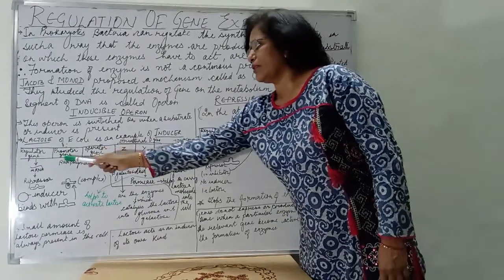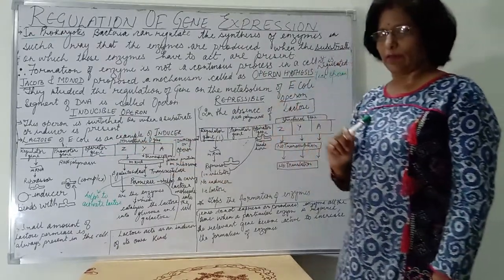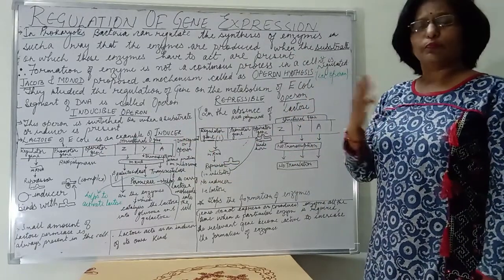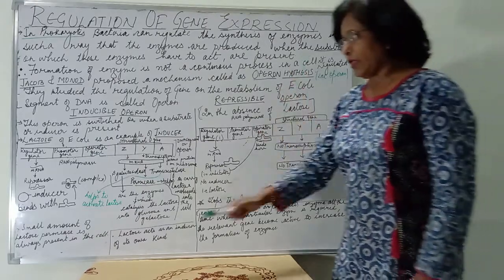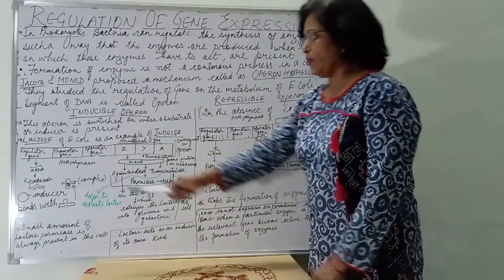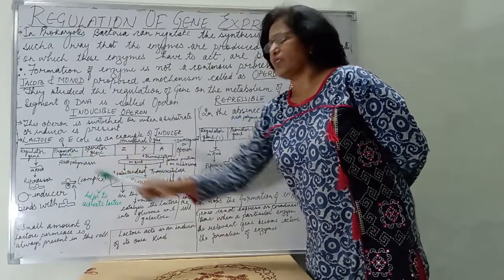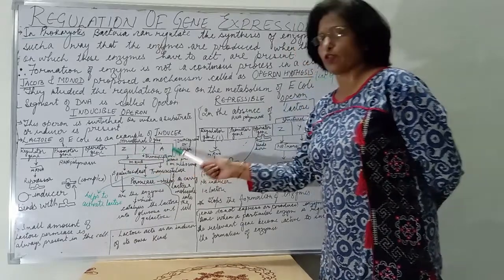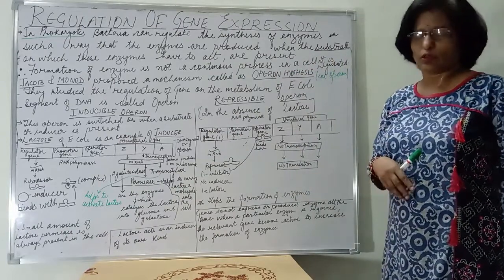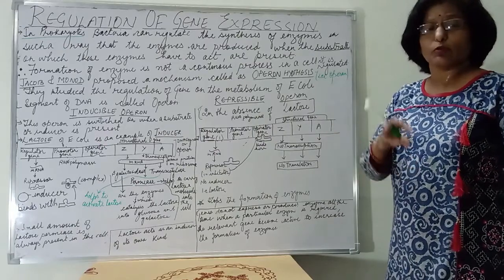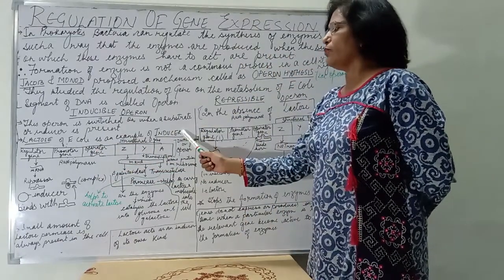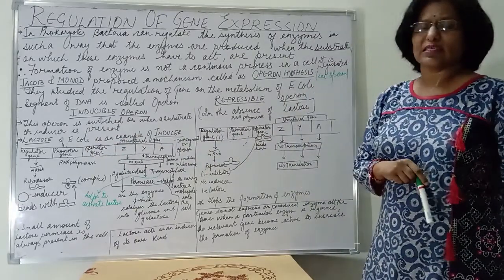They took the operon — the DNA segment — on which the genes are present and are responsible for giving rise to different enzymes. The different parts of the operon are named as: regulator gene, promoter gene, operator gene, and structural gene. The enzyme RNA polymerase, as discussed in transcription, is responsible for the transcription process. The inducer, lactose, is also very important and acts as a substrate.